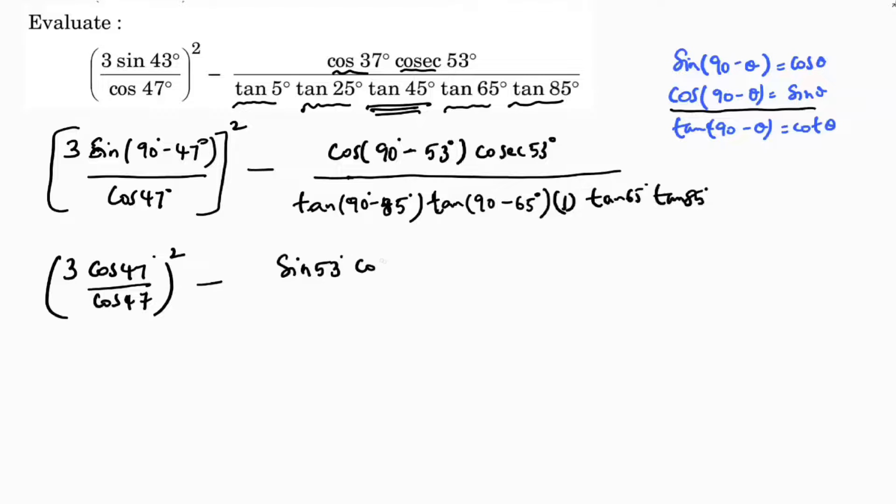Sin 53 into cosec 53 degrees. Tan 90 minus 85, tan 90 minus theta is cot theta, so cot 85. Tan 90 minus 65 is cot 65 into tan 65 tan 85.